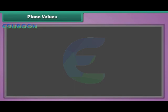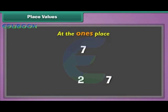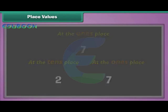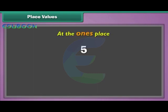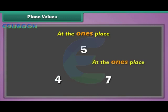Place values. Single-digit numbers have only one digit at the one's place. Two-digit numbers have one digit at the one's place and another at the ten's place. For example, the number five has only one digit — five — and it is at the one's place. The number forty-seven has two digits, four and seven. Seven is at the one's place and four is at the ten's place.